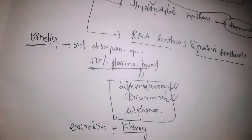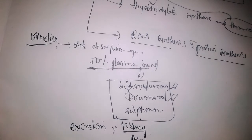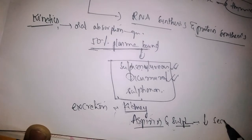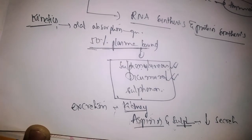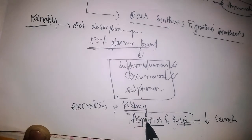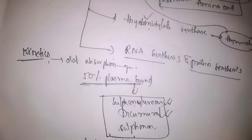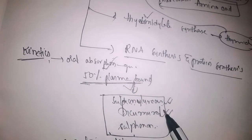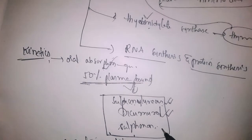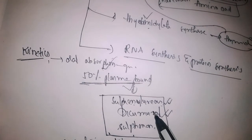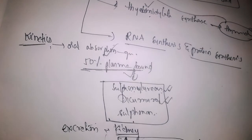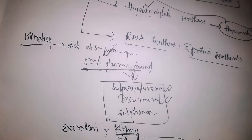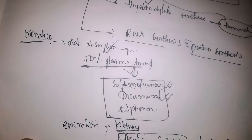Excretion is mainly by the kidney. Drugs like aspirin and sulfonamides reduce the secretion of methotrexate in the kidney, thereby causing increased toxicity. Metabolism is very little. So in summary for kinetics: oral absorption is good, it is 50% plasma bound, sulfonyl ureas, dicoumarol, and sulfonamides release it from plasma binding increasing toxicity, and aspirin and sulfonamides decrease renal secretion also causing toxicity.